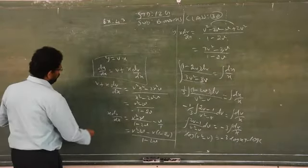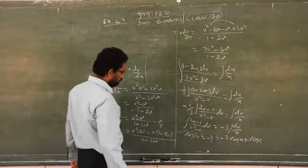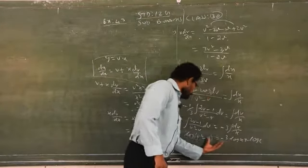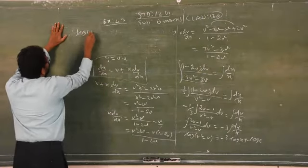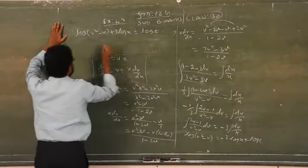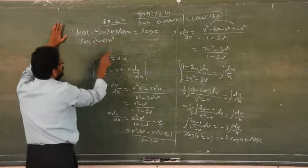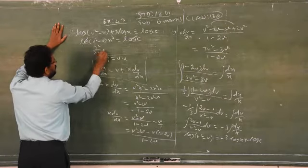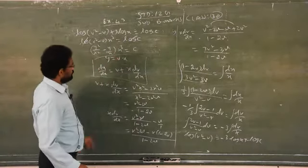Therefore, you write in logarithmic format: log(v² minus v) = minus 3·log x plus log c. As usual, you have to simplify further. The final answer is exactly what is given in the textbook. So you have to follow only your steps. If you take minus 3 as power of x, you can simplify, or take the right-side term to the left side — you will get the same answer.